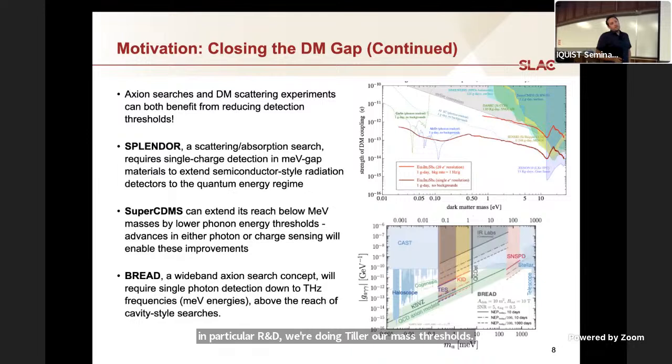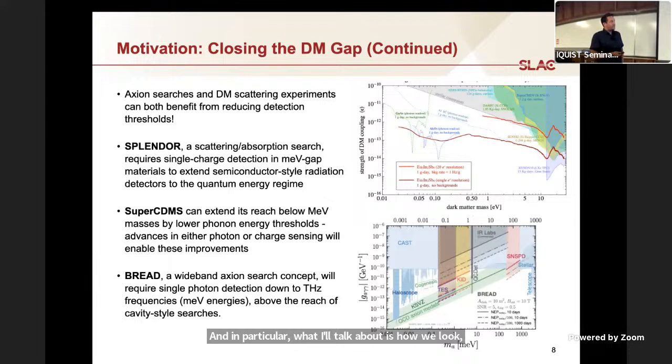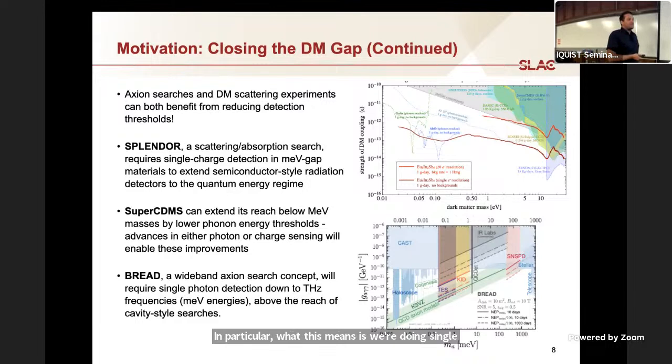In particular, at the end of the talk, I'm going to talk about three new experiments. Two new experiments and one very old experiment, but in particular R&D we're doing to lower our mass thresholds. This first one is talking about using quantum materials to do light dark matter detection by finding materials with MEV scale gaps and then doing conventional charge detection. In super CDMS, we look at the direct detection of phonons in cryogenic substrates. In particular, what I'll talk about is how we do milliEV scale phonon detection, which means we're doing single optical phonon detection stochastically, not pump probe, but seeing every single optical phonon produced in material over a given amount of time.